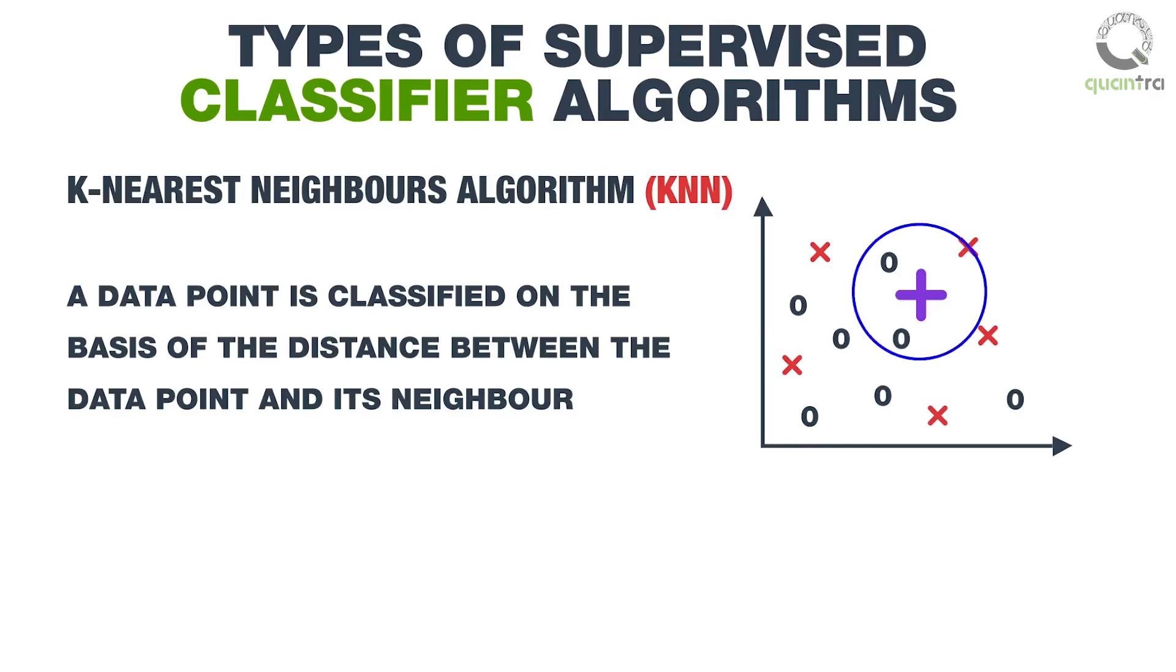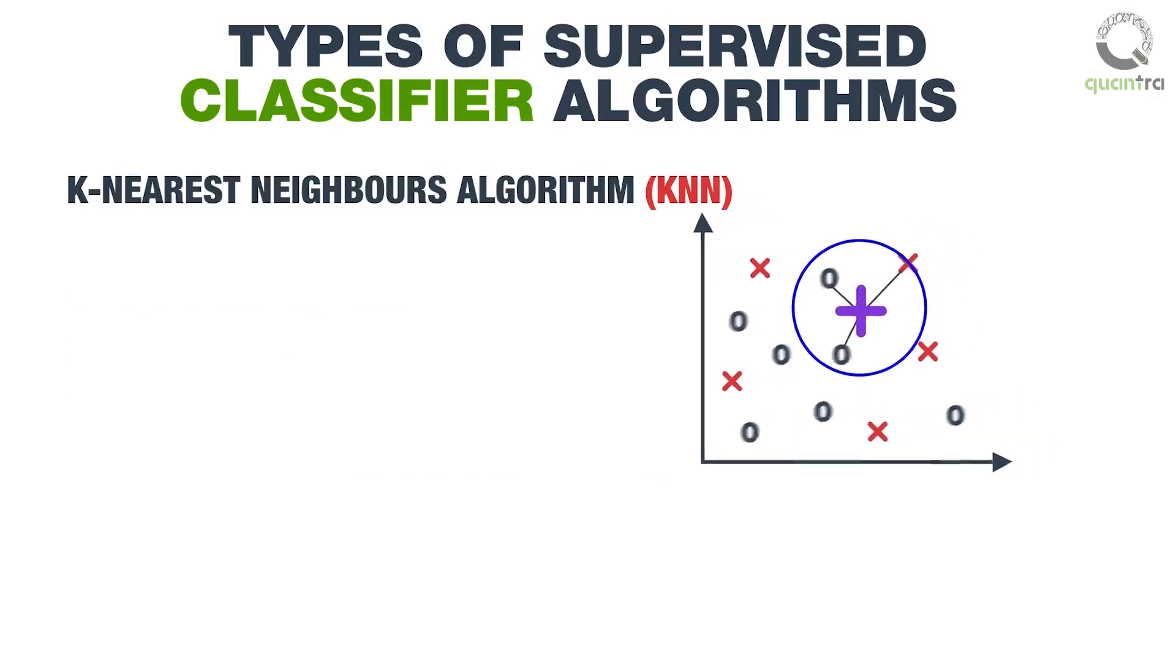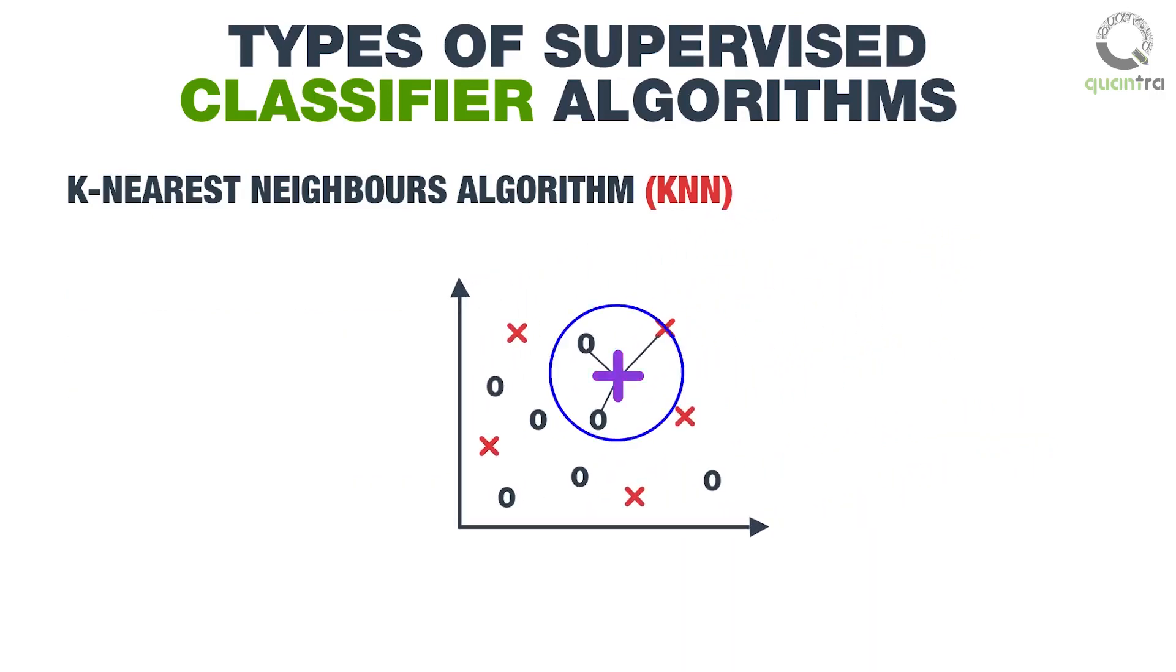Now, within the circle, the number of zeros is more than the number of x's. Hence, the class of plus will be zero. In this fashion, KNN is used to classify a data point into predefined classes.